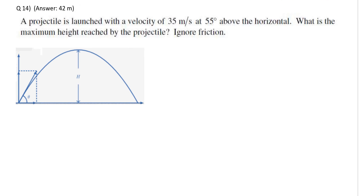In this next question, a projectile is launched with a velocity of 35 meters per second at 55 degrees above the horizontal, and we want to find the maximum height reached by the projectile, ignoring friction. The launch velocity is denoted in red at 35 meters per second, and the angle is 55 degrees above the horizontal.